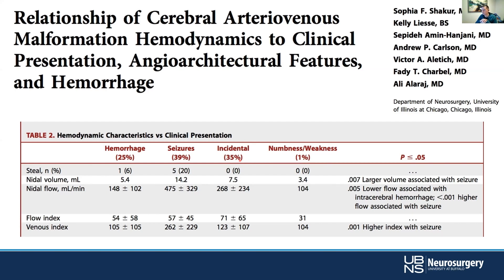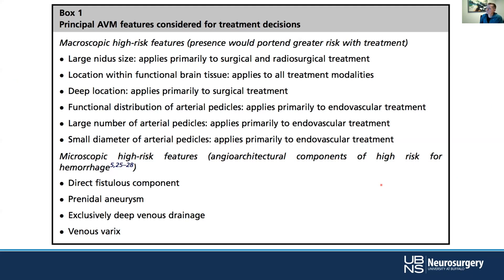This is from a paper by Aliyah Larajan and his group, looking at how imaging characteristics coincide with clinical presentations. The most common presentations for AVMs are hemorrhage, seizure, incidental discovery, or focal neurologic deficits such as numbness and weakness. Certain characteristics tend to correlate — for instance, larger volume associates with seizure, lower flow with hemorrhage, higher flow with seizure — and so forth. We can use this to understand symptomatology and potentially risk for future symptoms as we evaluate these lesions.